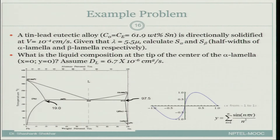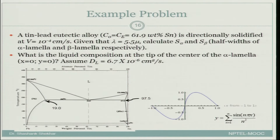First we need to find s_alpha and s_beta, given only lambda = 2(s_alpha + s_beta). We can use the lever rule: the length on the phase diagram describes the weight percent of the beta phase, and the other length describes the weight percent of the alpha phase. Since it is a eutectic, only those two lamellae are being formed, which simplifies the equation. The alpha and beta widths are proportional to their respective lever rule lengths.